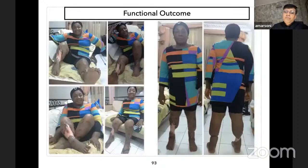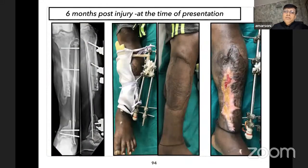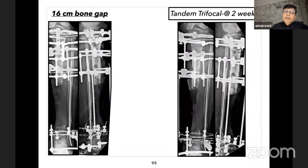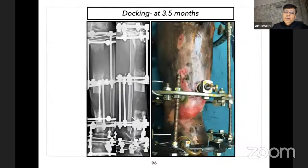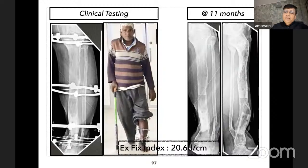Another case: six months post-injury, large gap, external fixator with all loose spin-frame removal. Dual corticotomy was done. At the time of docking the alignment was reasonable, but there was some residual varus post-frame removal. The patient was in frame for eleven months and had a healing index of 20.6 days per centimeter.